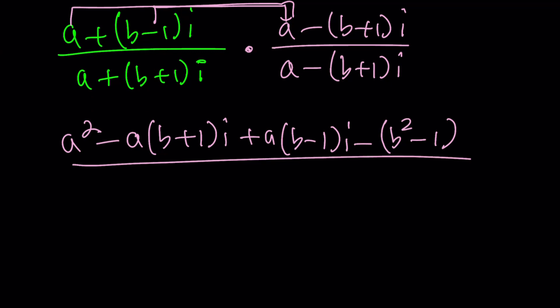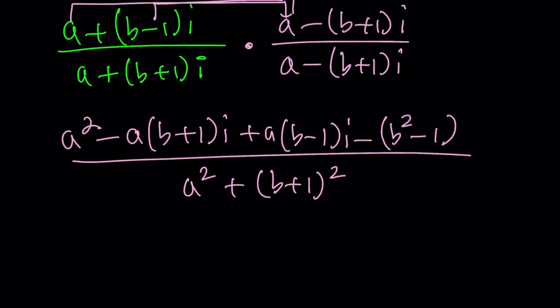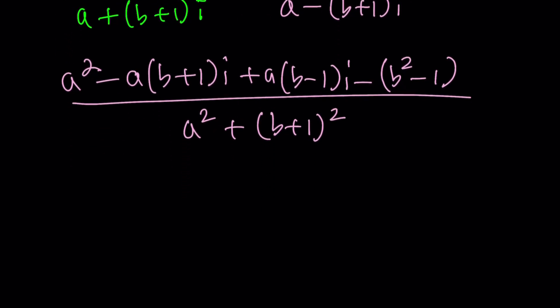And then all over the bottom one is the sum of two squares. I was about to say difference, but it's a sum of two squares. Remember that it's always a real number. Now, these two don't cancel out, but we can combine them. For example, we can get A squared minus B squared plus 1 as the real part. And as the imaginary part, think about it, you have AB minus A, and then you have negative AB minus A. And of course, ABs are going to cancel out, and you're going to end up with negative 2AI. That's going to be our imaginary part.